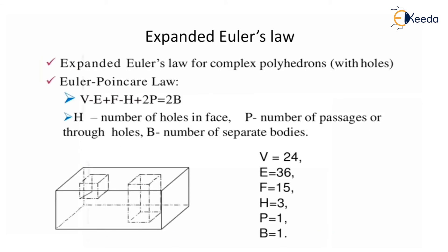Expanded Euler's law for complex polyhedrons with holes is the Euler-Poincaré law: V minus E plus F minus H plus 2P equals 2B, where H is number of holes in a face, P is the number of passages or through holes, and B is the number of separate bodies. For the example figure, B equals 1, P equals 1 (one rectangular through hole), H has three holes in the faces — two on the upper side and one on the bottom. F equals 15, edges are 36, and vertices are 24.